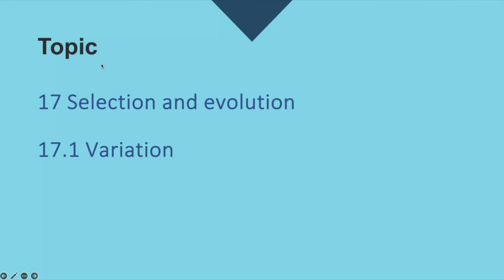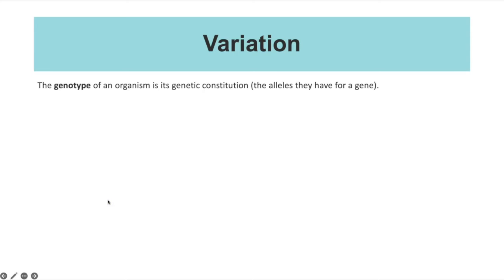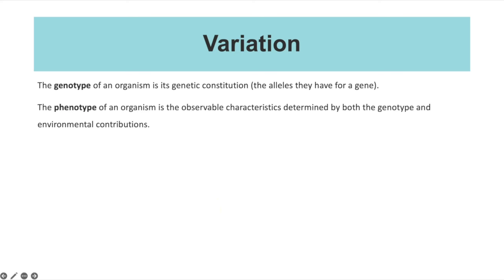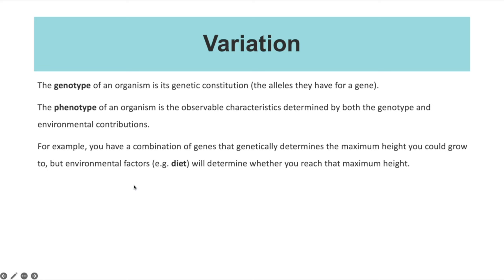Topic 17 covers selection and evolution, starting with variation. The genotype of an organism is its genetic constitution — basically the alleles they have for a particular gene — whereas the phenotype is the observable characteristics determined by both the genotype and environmental contributions. For example, your genes determine the maximum height you could reach, but environmental factors such as diet determine whether you actually reach that maximum height.